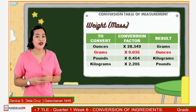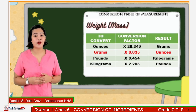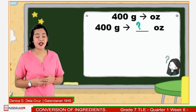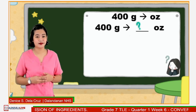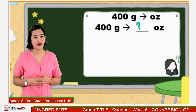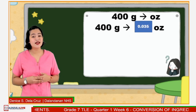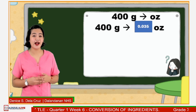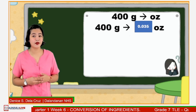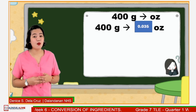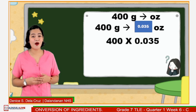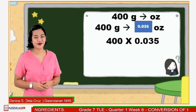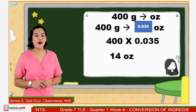Let us try another one. Convert 400 grams to ounces. According to our conversion table, one gram is equivalent to 0.035 ounce. We are looking for the equivalent value of 400 grams to ounces, so we multiply 400 by 0.035. Very good! The answer is 14 ounces.